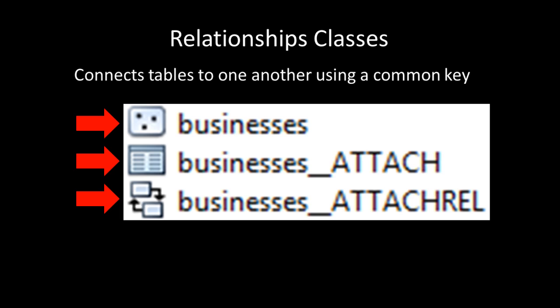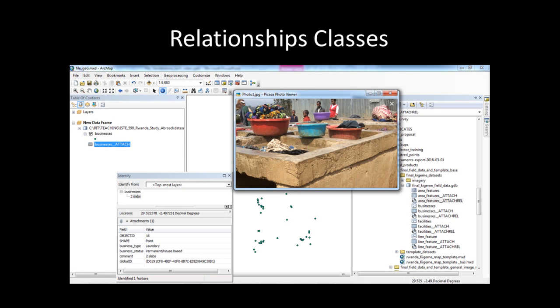In the next part of this lesson, I will walk you through how this works in practice. When a user clicks on a point feature using the Identify tool, the Identify window opens showing the attributes associated with the point feature, as well as the fact that there is an attachment or picture associated with the point. When the user clicks on the attachment section of the Identify window, the relationship class looks for the record in the standard table that matches the record in the point feature class table. When the match is found, the picture associated with the point feature is then opened.